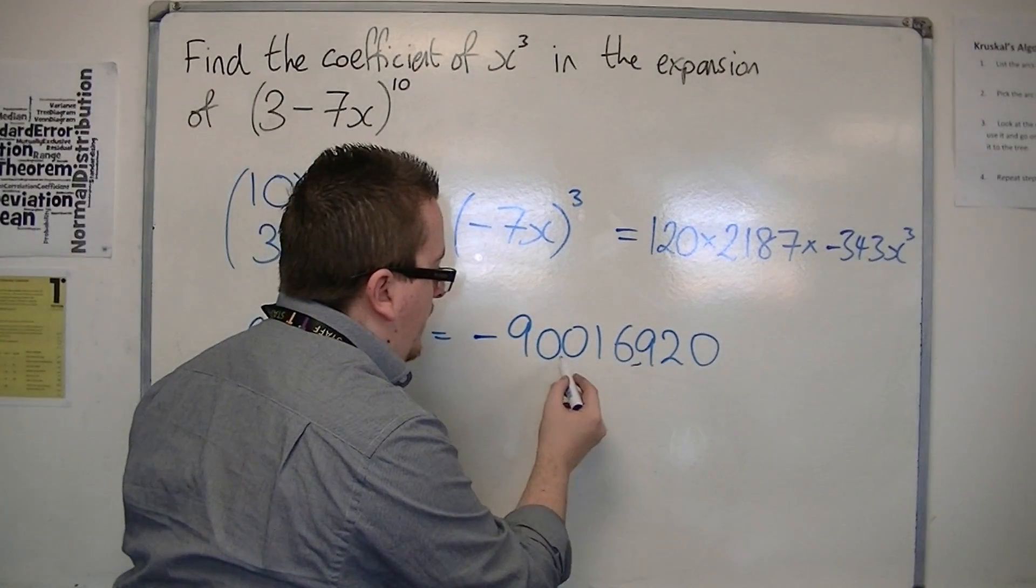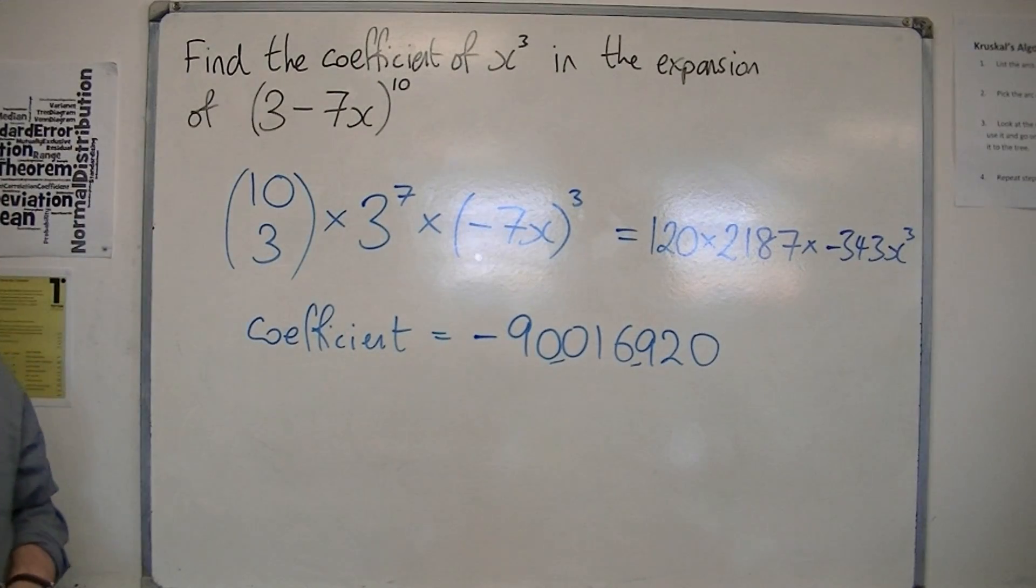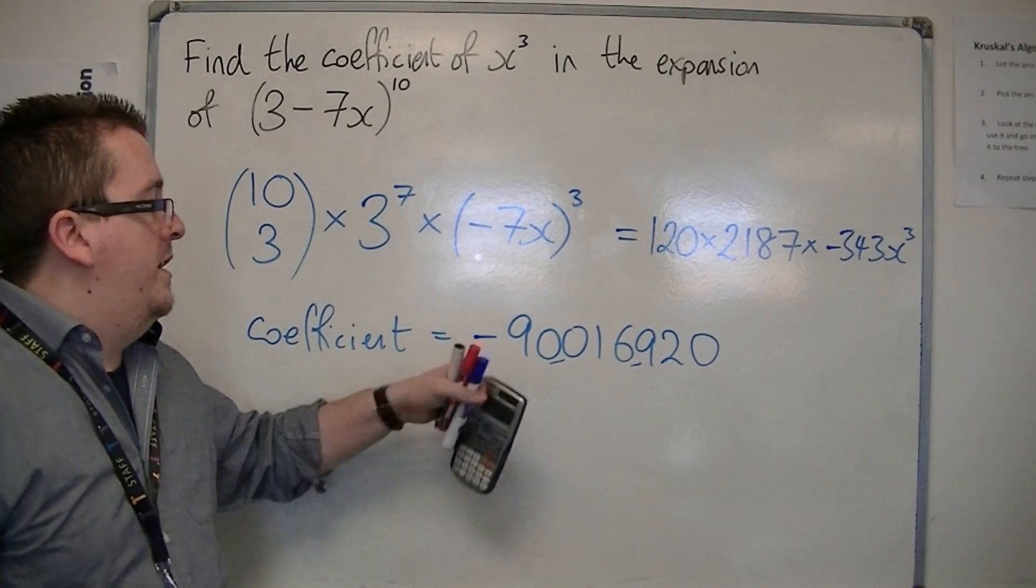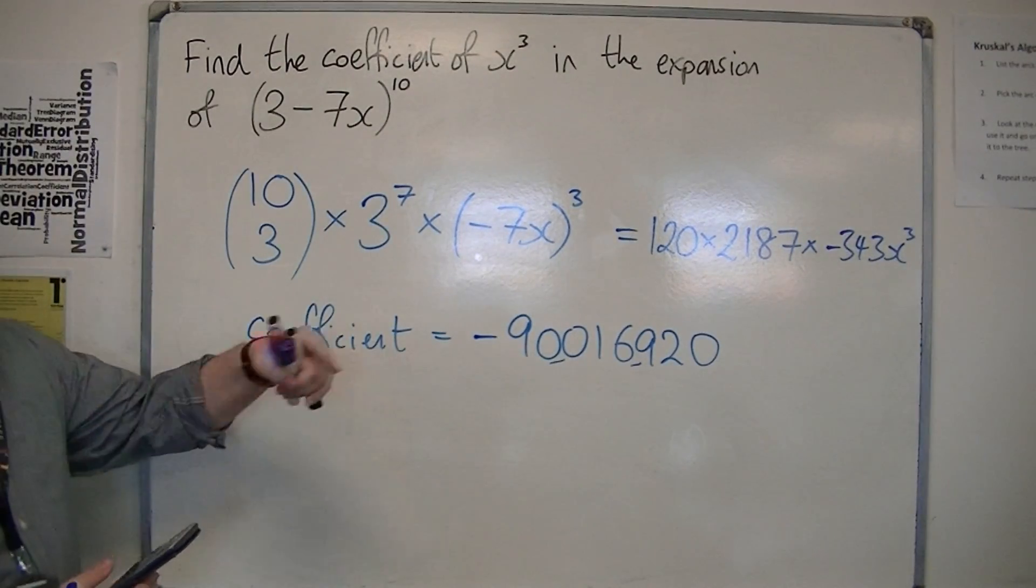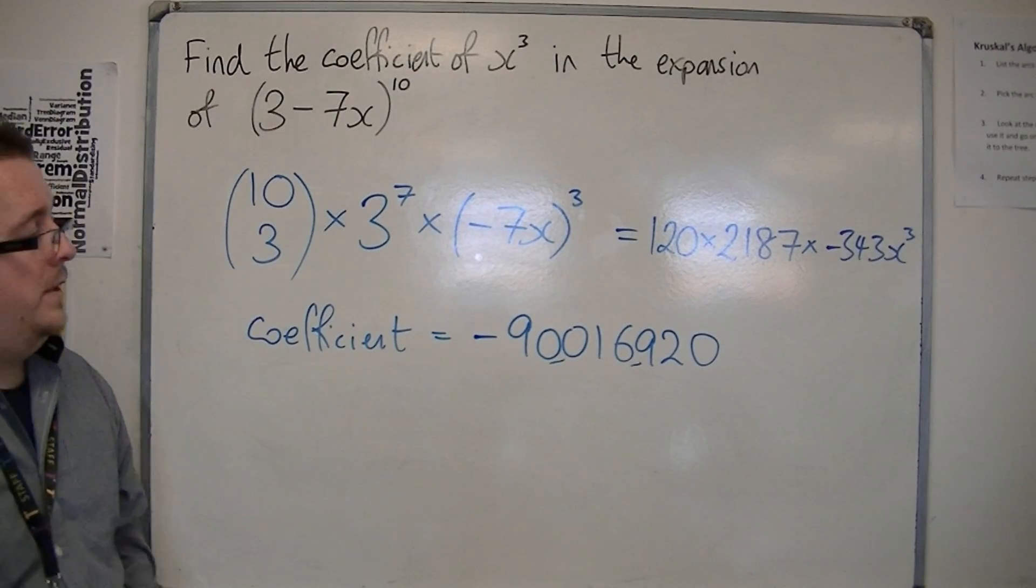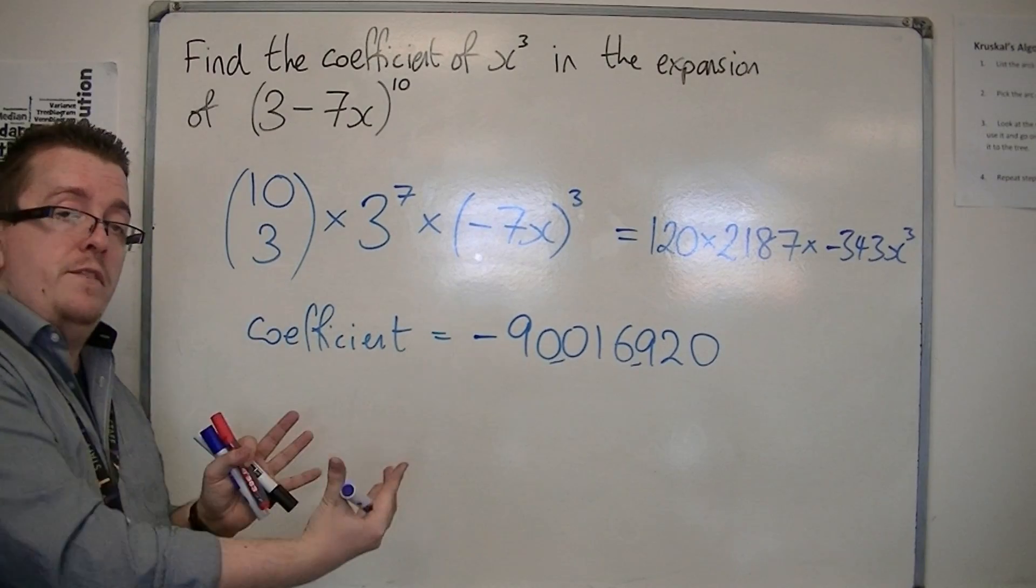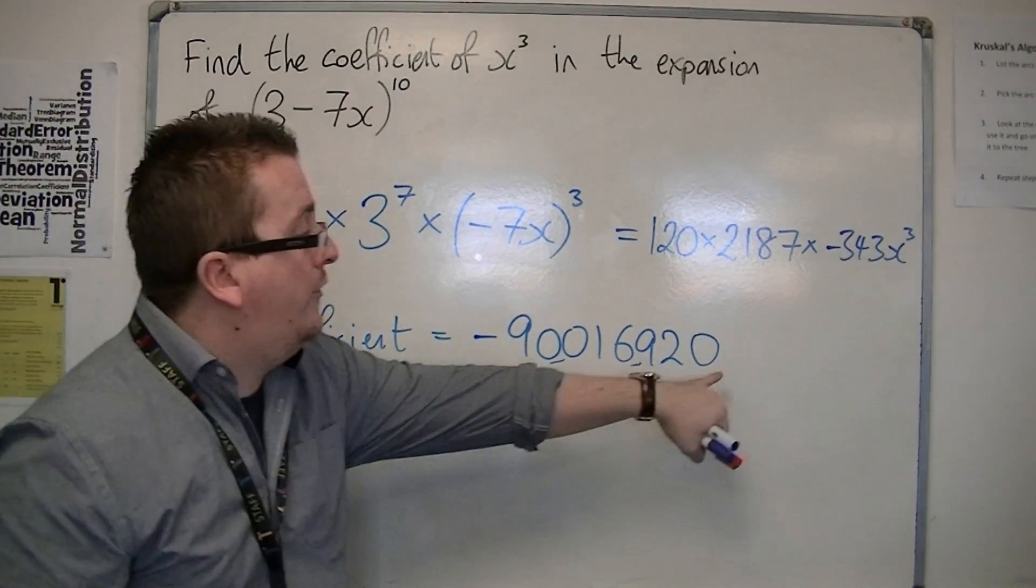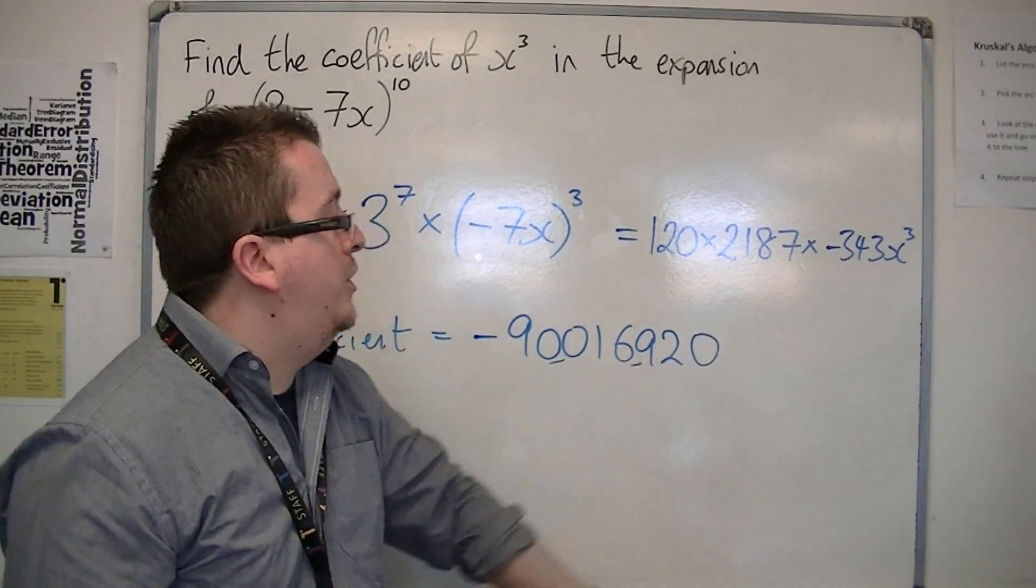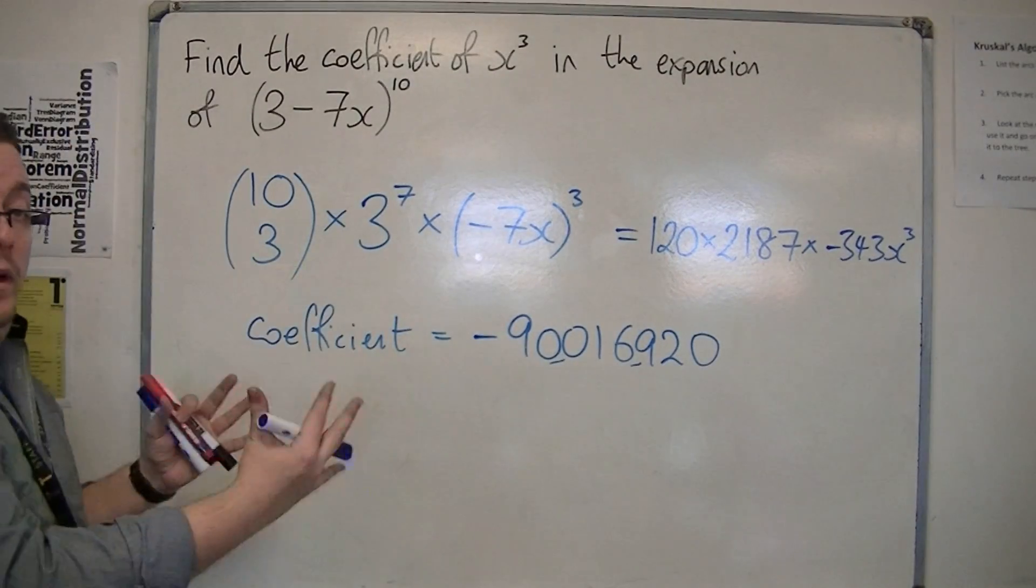So that's minus 90,016,920. That's the coefficient, it's just looking for the number in front of the x cubed, not the x cubed on the end. So don't have the x cubed on the end, we just want the number.